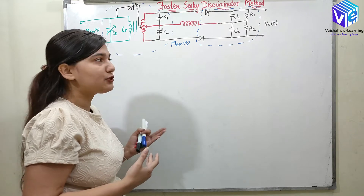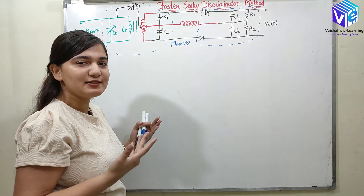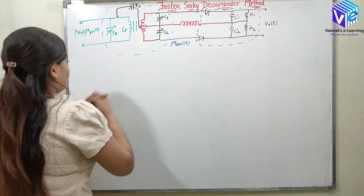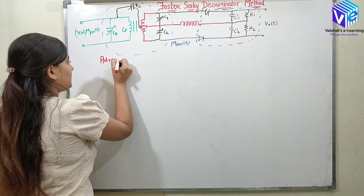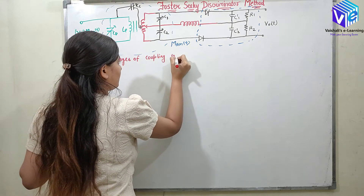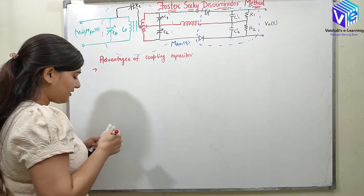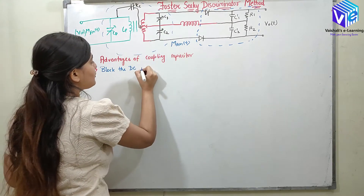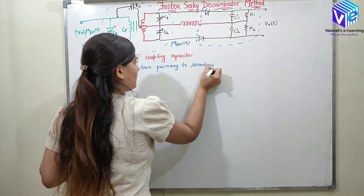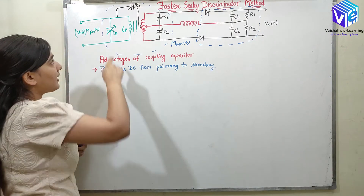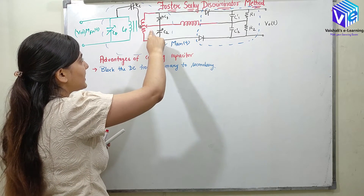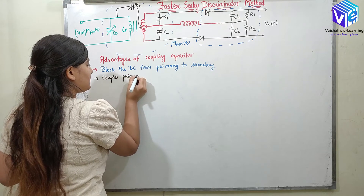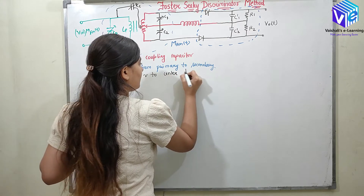Now we will see the changes from the balanced slope detector. It seems exactly the same as the balanced slope detector — it just has some small changes. The first change is that we have the coupling capacitor. The first advantage of the coupling capacitor is that it blocks DC from primary to secondary. The second advantage is that it couples the frequency of the primary to the secondary at the center-tapped portion of the inductor — it couples the primary frequency to the center-tapped secondary.